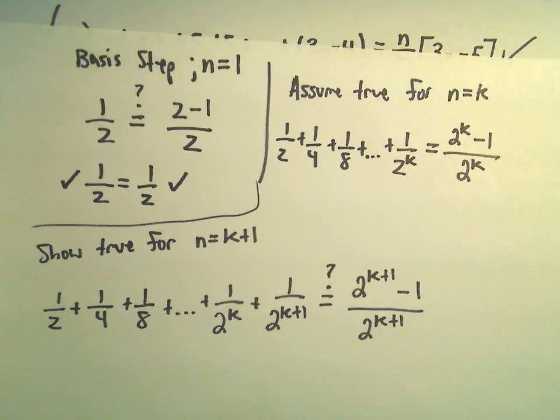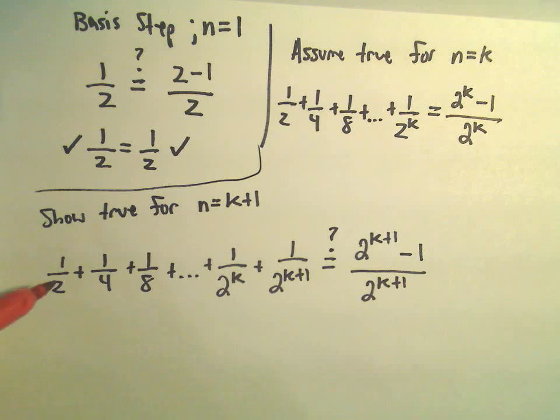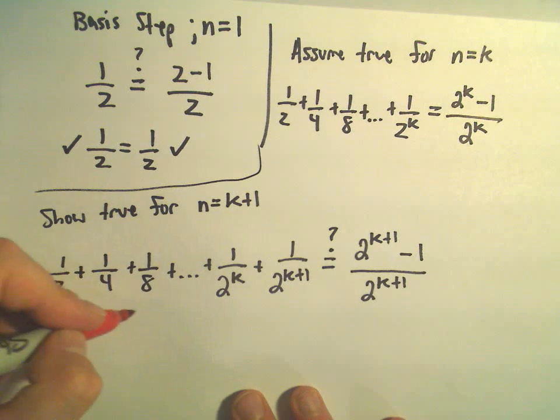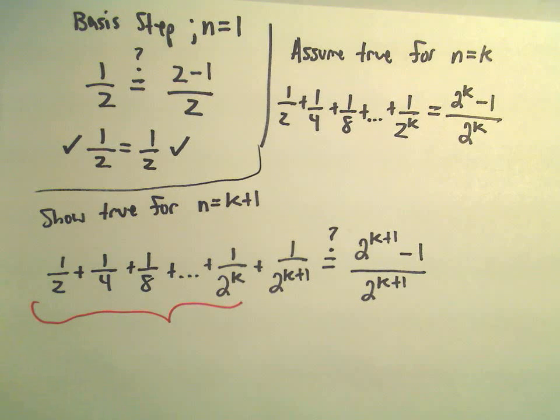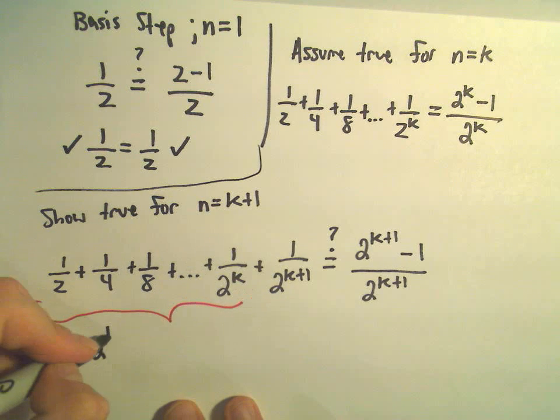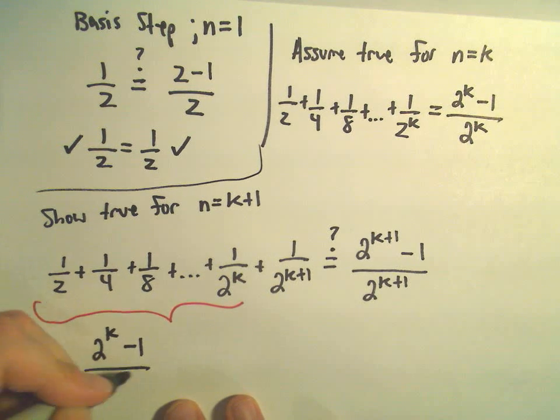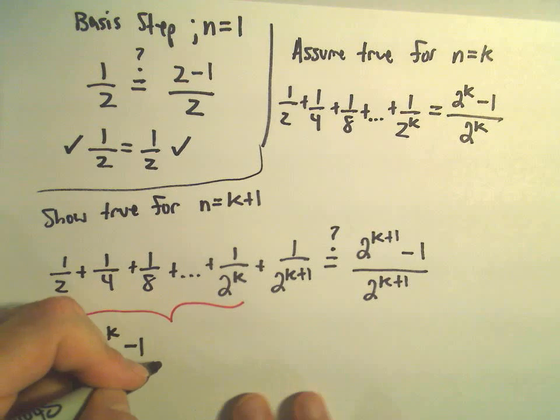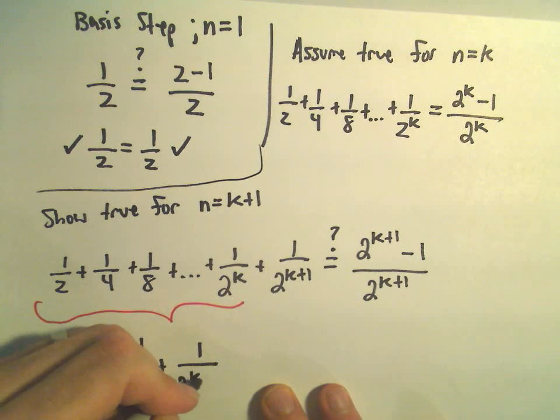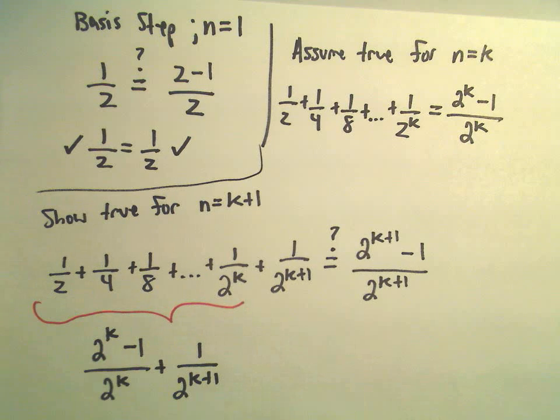Well, I'm going to use our assumption that 1 half plus 1 fourth plus 1 over 2 to the k, we're making the assumption that that's equal to 2 to the k minus 1 over 2 to the k, and then we have 1 over 2 to the k plus 1 left over.